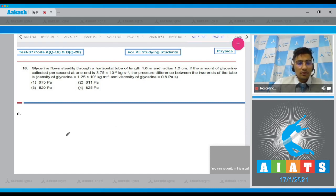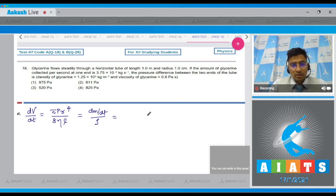As per Poiseuille's formula the rate of flow that is dV by dt where V is the volume is given as pi p r^4 by 8 eta l. Now dV by dt will be equal to dm by dt divided by the density rho and this will be equal to 3.75 x 10^-3 and rho is 1.25 x 10^3 as given in the equation. This will be 3 x 10^-6 meter cube per second.